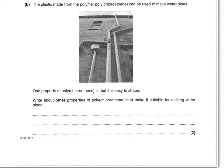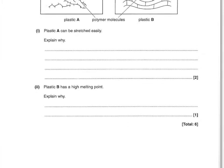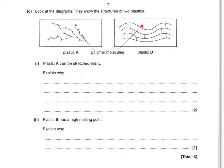Look at the diagrams showing structures of two plastics. Plastic A can be stretched easily — explain why, two marks. The intermolecular forces or bonds between the polymer chains are weak, so the polymer molecules can slide over each other easily, or the intermolecular forces are easy to break. You could also say there's no cross-linking or no bonds between the polymer chains. Plastic B has a high melting point — explain why: because there are strong intermolecular bonds or covalent bonds between the polymer molecules.